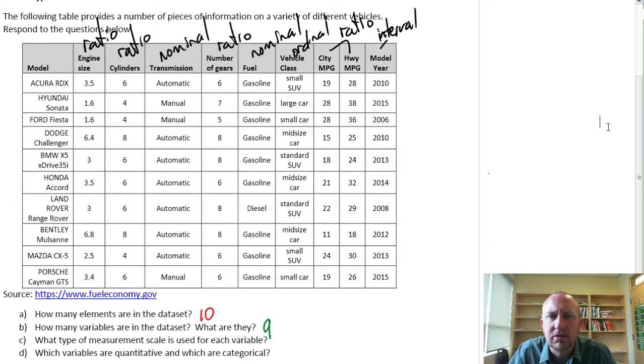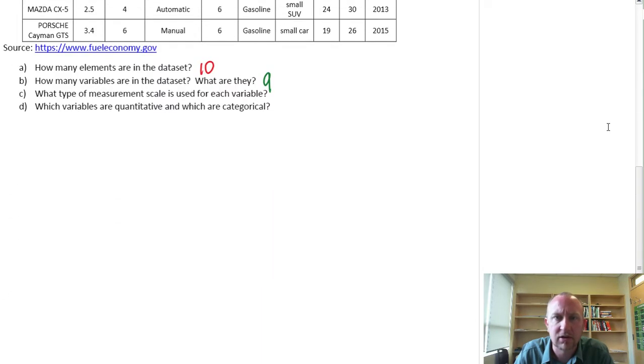So I'm just going to go through a bit of a graphic to help illustrate this and then we'll come back and it should be relatively straightforward, I hope, to identify these particular variables in terms of whether they're quantitative or categorical.